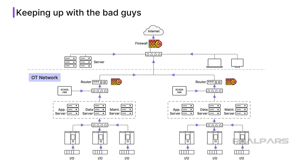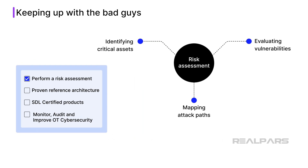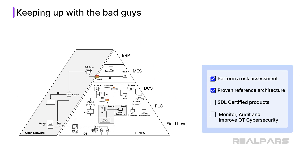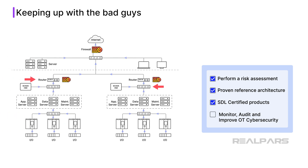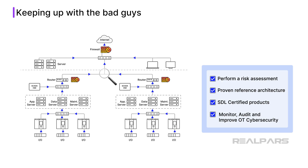Remember, steps to a secure network include: Number one, perform a risk assessment to identify assets and vulnerabilities. Number two, plan your OT network around a proven reference architecture. Number three, use SDL-certified switches, routers, and security appliances that reference industrial cybersecurity standards and are built based on a certified secure development lifecycle to protect your network. And number four, develop procedures for monitoring, auditing, and continuous improvement in your OT cybersecurity strategy.